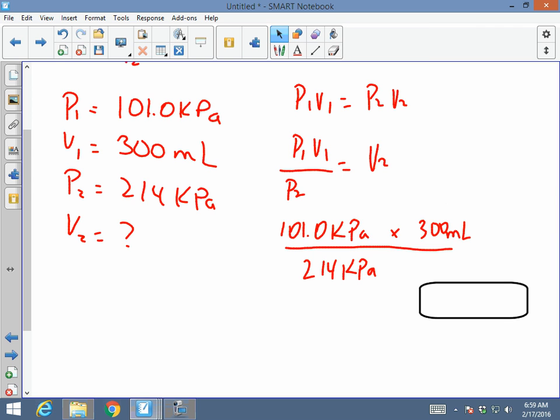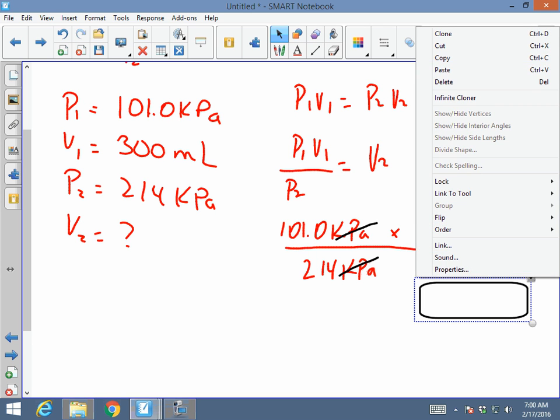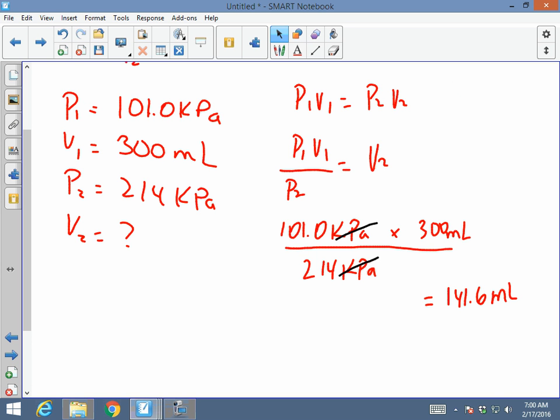Let's plug in those values. 101 kPa times 300 milliliters, divided by 214 kPa. If I were to cancel kPa over kPa, the only unit left that I have in this equation is milliliters, which is what I'm looking for, volume. Therefore, if I multiply 101.0 times 300 milliliters, divided by 214, I would end up with 141.6 milliliters, which is the new volume for this question.